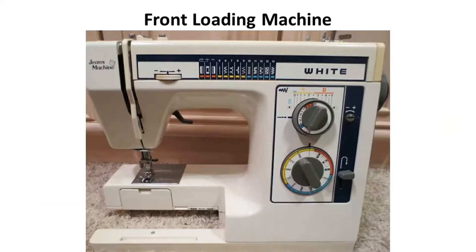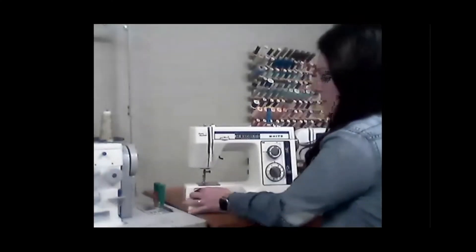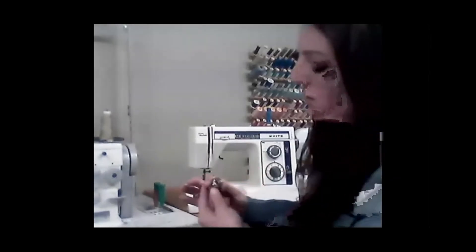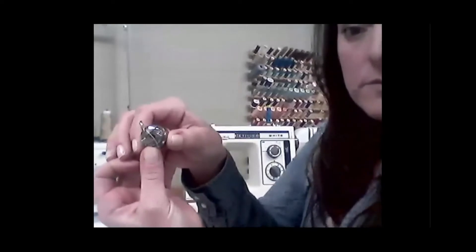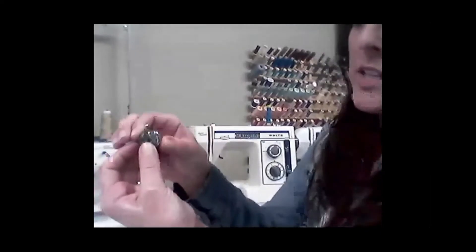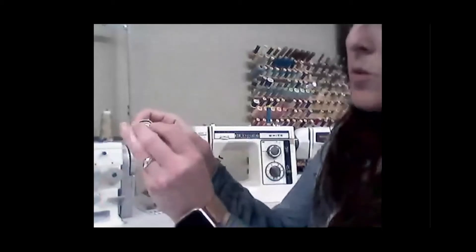So I'm going to start with a front-load bobbin case. If you have a front-load bobbin, you have to make sure it looks like this. When you see in the machine, the little finger goes up, but when you're placing it, you want to flip it over.